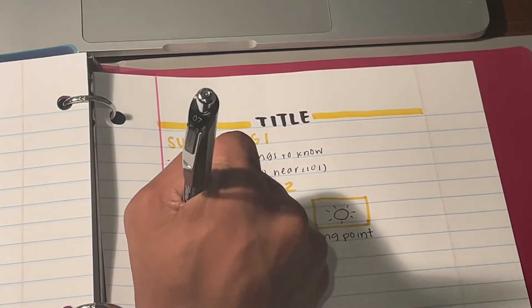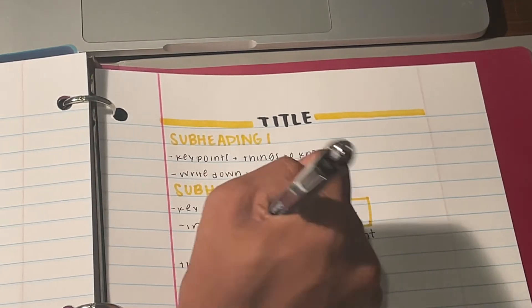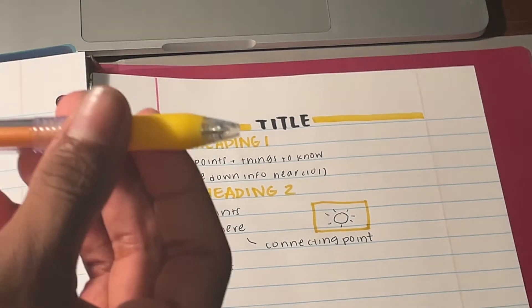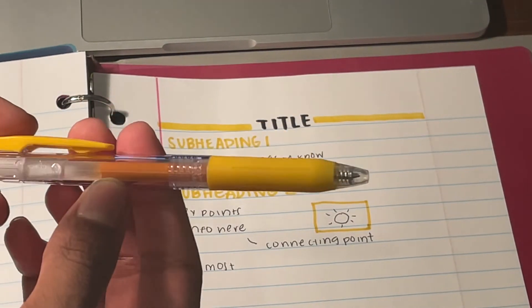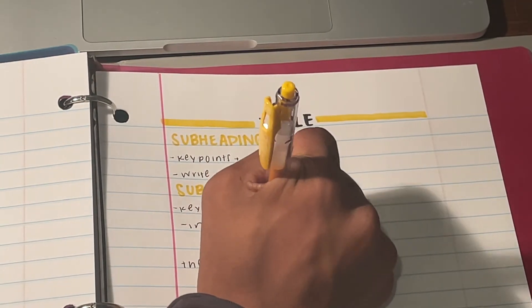For pieces of information that are especially important, I like to write them down in a color other than black. For this video, I'm using a yellow Zebra Sarasa pen just to match the highlighter color. This is of course optional, but it helps me see vocabulary words that stand out.